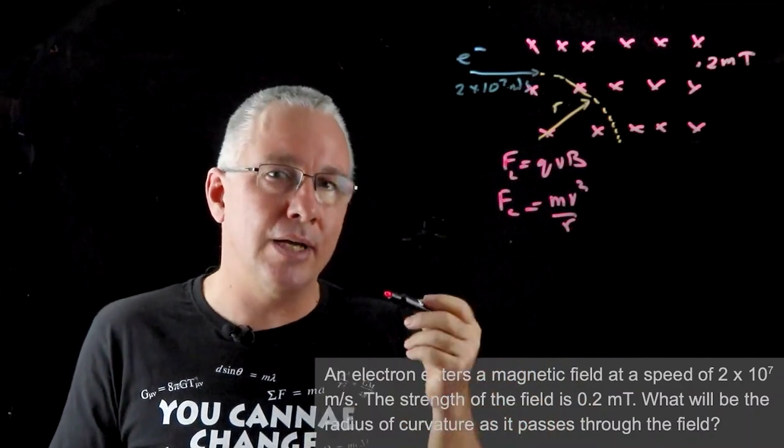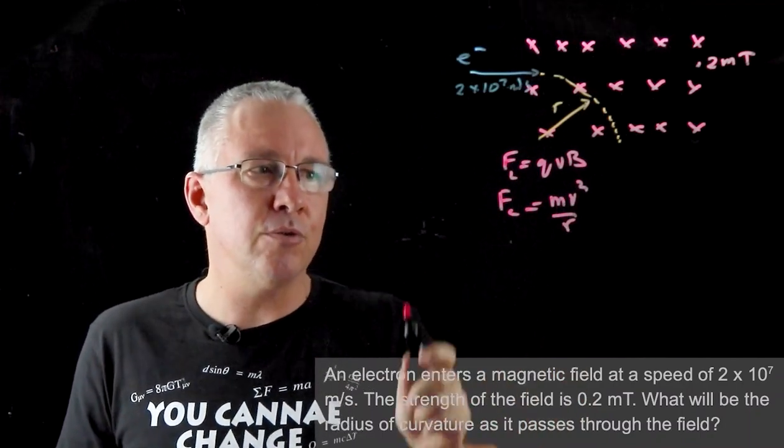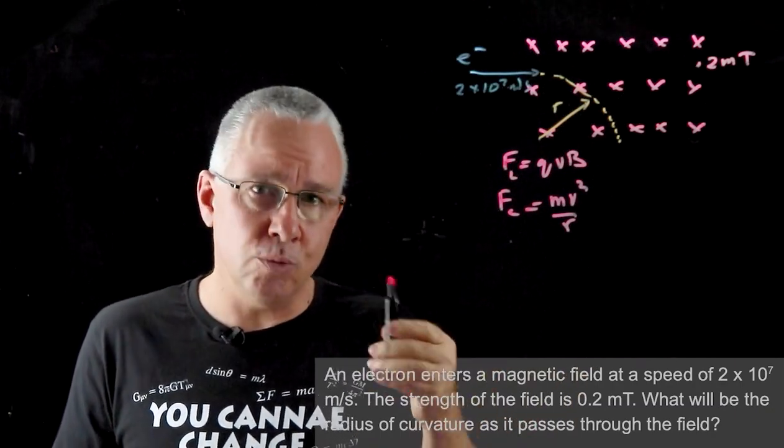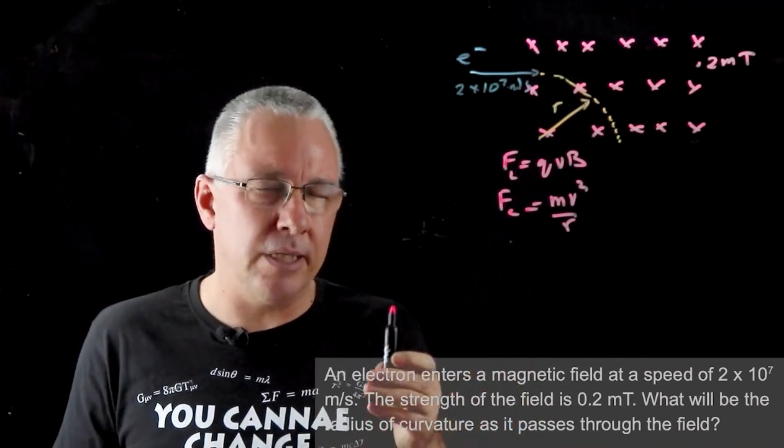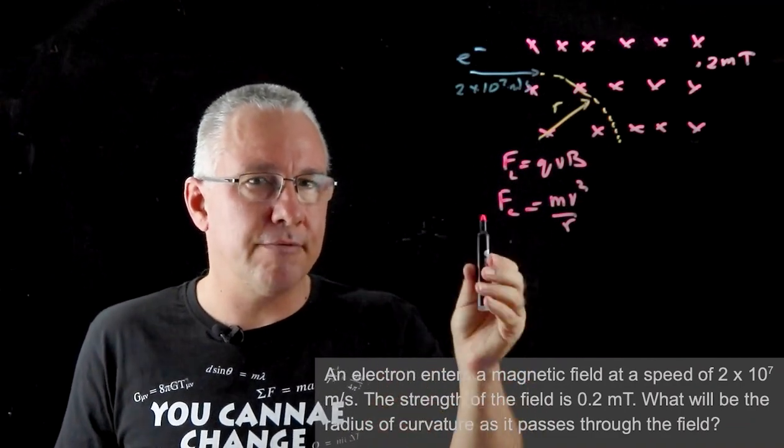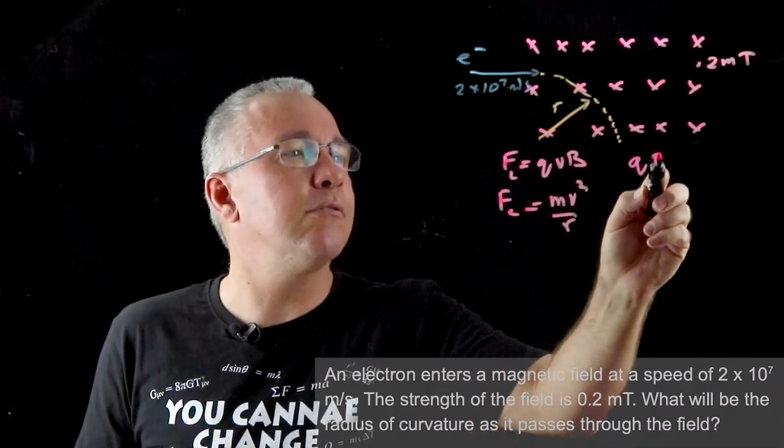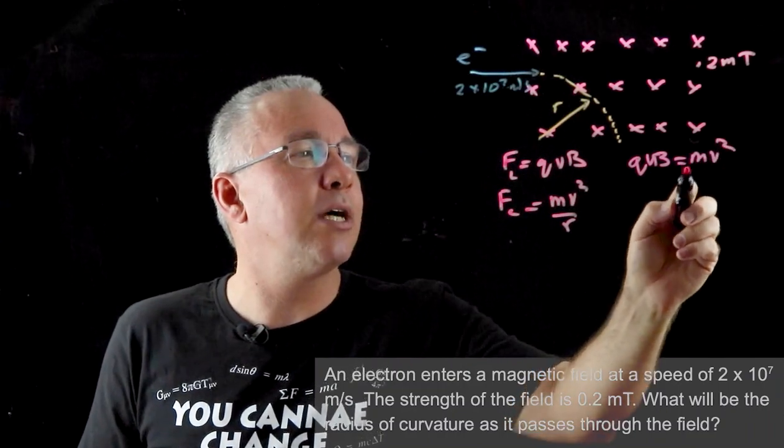Now these two forces are equal. So you can solve this one of two ways. You can work out what the Lorentz force is and then substitute it into the centripetal force formula to work out our radius. Now I'm going to put the two together - you're just going to be careful in exam conditions that you don't stuff this up. So these two forces are equal, so I can make this QVB = mv²/r.